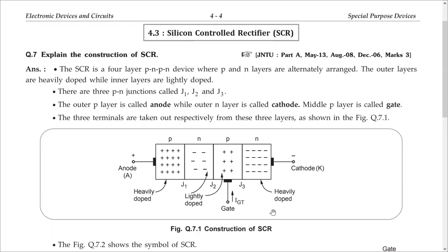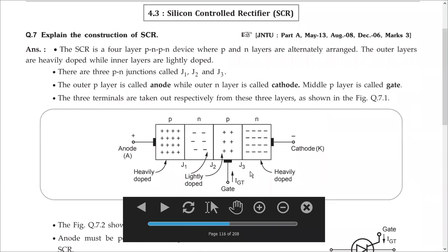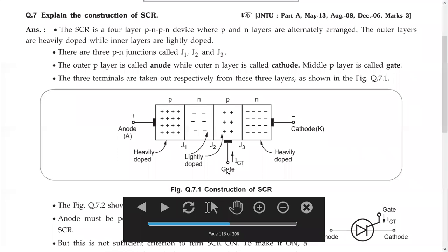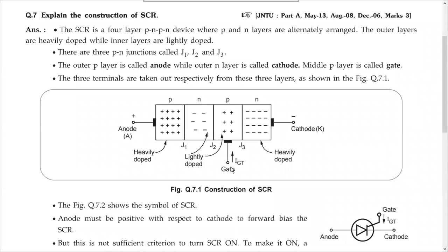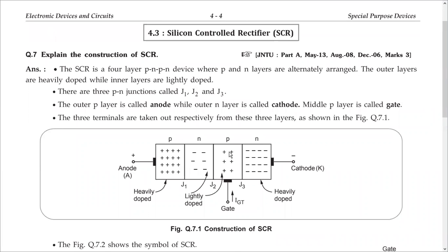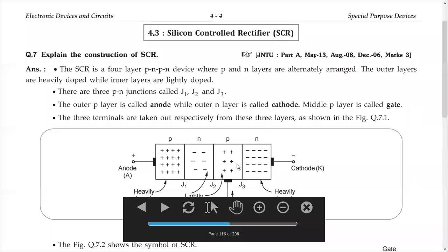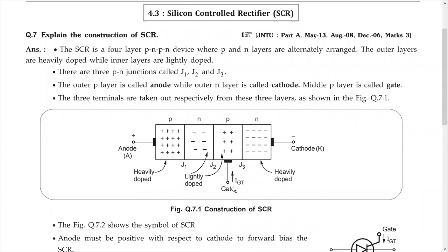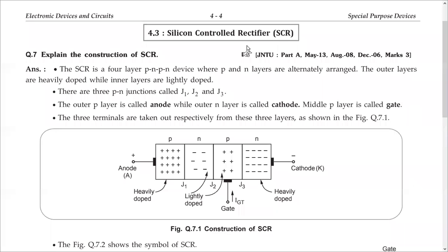Additionally, you have a control terminal — the gate terminal. I told you silicon controlled rectifier allows you to have control over the rectification. So how do you control that? You can use this gate terminal. Based on the amount of gate current we supply, you can have control over the rectification in this particular device.